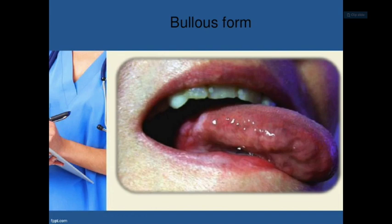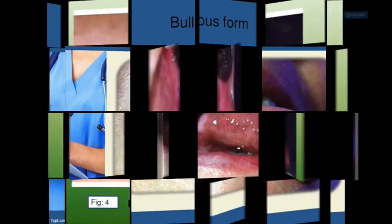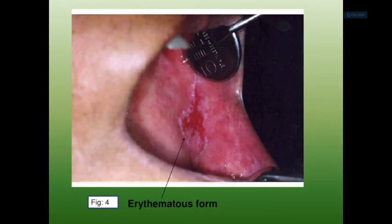The histopathologic examination of oral lichen planus is necessary because it helps rule out other red and white lesions. The first finding is hyperparakeratosis or hyperorthokeratosis on the most superficial layer of the epithelium. This means the keratinocytes undergo excessive keratinization, forming a more keratin-dense keratohyalin layer — either ortho or parakeratinized — resulting in thickened surface layers.